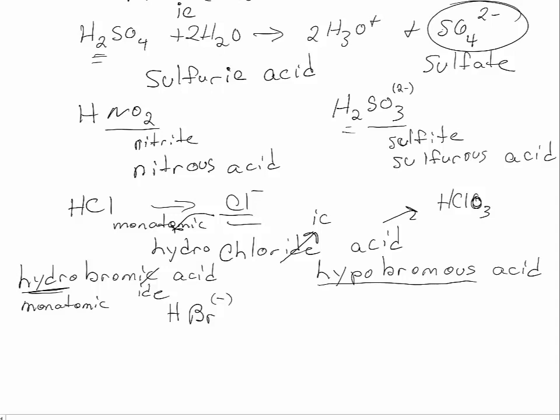How about hypobromous acid? Well, there's no hydro here, so this is based on a polyatomic ion. So hypobromite is BrO, and just like the chlorine oxyanions, this only has a 1- charge as an ion. So as an acid, there's only one H there.